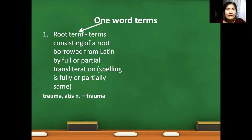Trauma. In English, trauma. As you see, trauma was borrowed into English by full transliteration because spelling in two languages is ultimately the same. Next example: gangrena. This term was borrowed by partial transliteration because spelling in English is a little bit different than Latin spelling. Carious is an example of full transliteration.